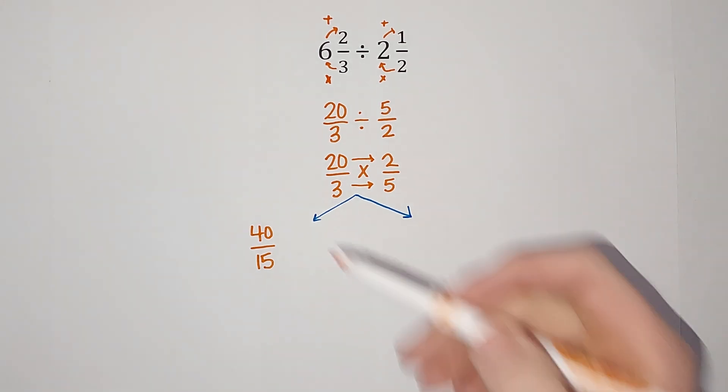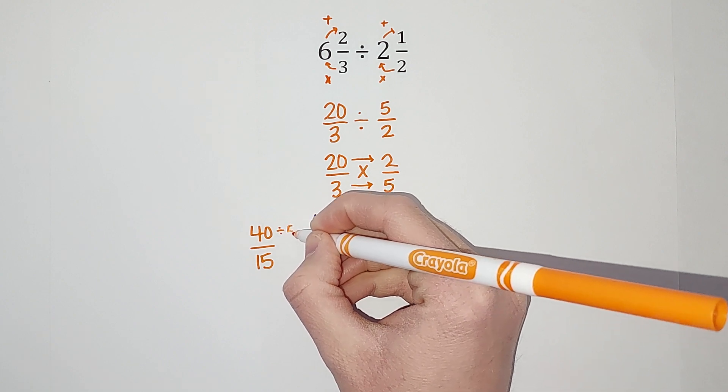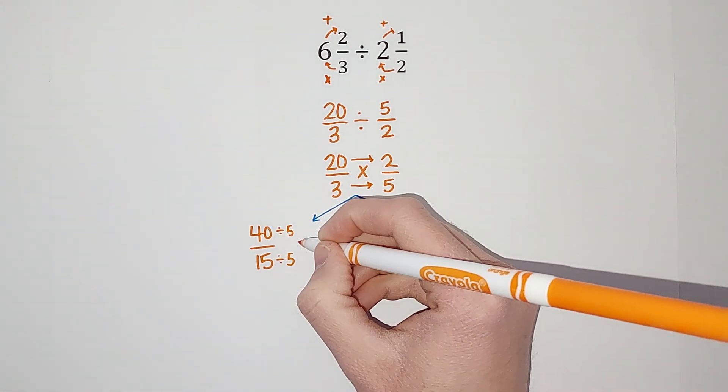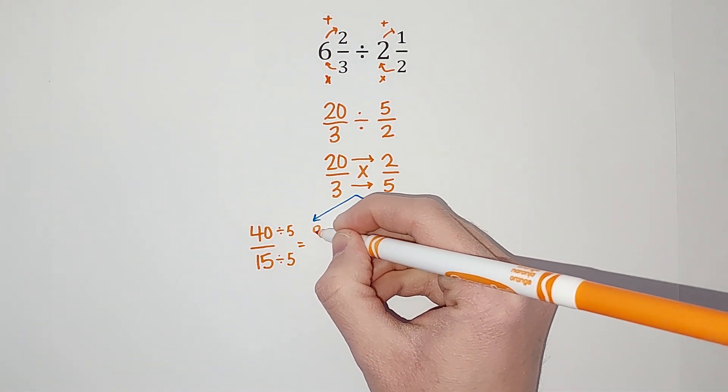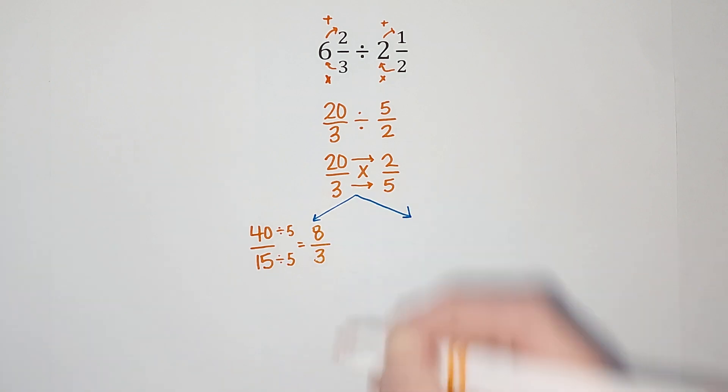And then we always want to make sure that our fractions are as simplified as they can go. So I noticed that 5 can go into both of these. If you are not super comfortable reducing fractions I'll link a video in the corner. 40 divided by 5 gives me 8, 15 divided by 5 gives me 3.